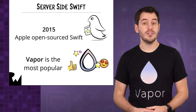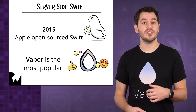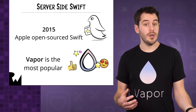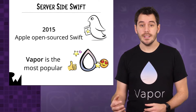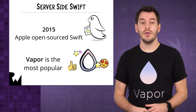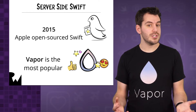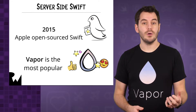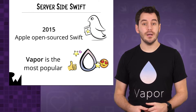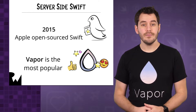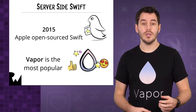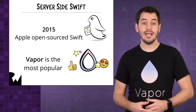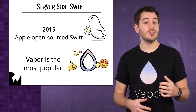Ever since Swift was open-sourced by Apple in 2015, it has been possible to run Swift code on Linux, which makes it a great option to write server applications for your mobile apps. It is quick, easy to learn, and type-safe, providing a large number of benefits over some of the more traditional server languages and even some of the newer ones. A number of web frameworks have emerged that allow you to write fully fledged APIs and web apps in Swift, and Vapor has become the most popular framework due to its community, speed, and ease of use.